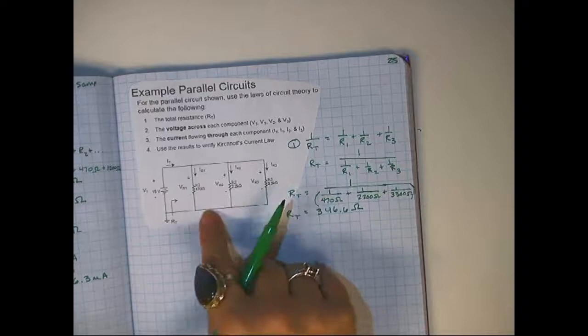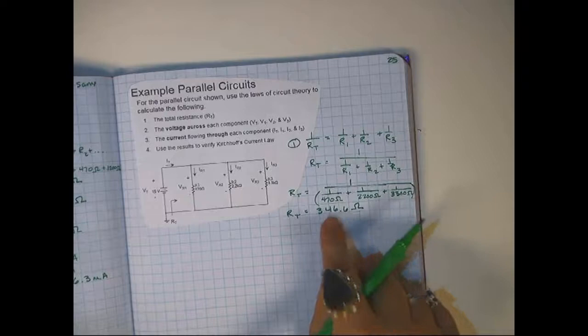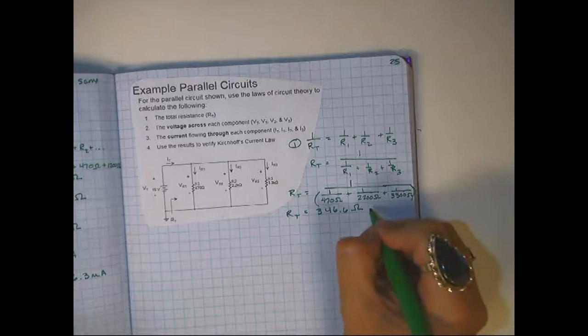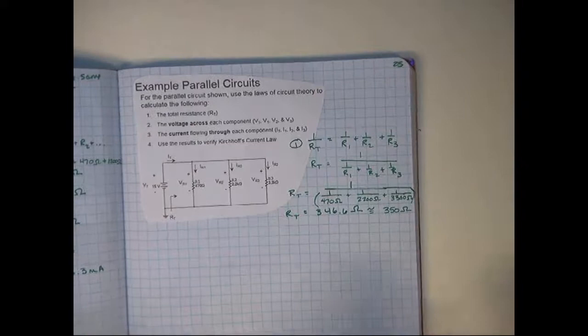Notice that my total resistance in a parallel circuit is lower than my individual ones. It's always going to be lower. If you're not getting a lower resistance here, then you did something wrong. And then they round this off to be 350 ohms. They just round it off.